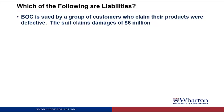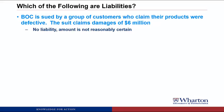Finally, BOC is sued by a group of customers who claim their products were defective. The suit claims damages of $6 million. This would not be a liability. It does meet the first criteria — there's a potential obligation based on a benefit received in the past, since we sold products which turned out to be defective. However, it doesn't meet the second criteria because the amount of payment is still uncertain. Until we have a settlement or go to trial, we don't know whether we have to pay anything.